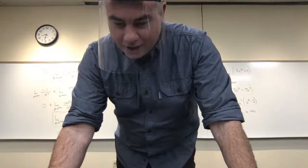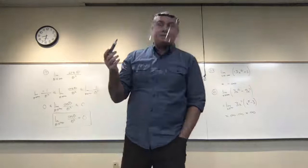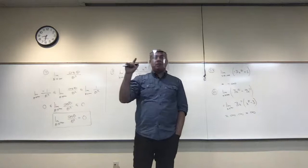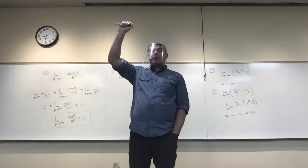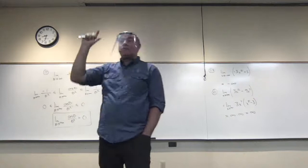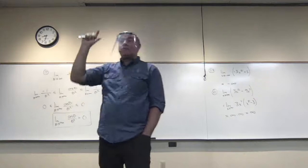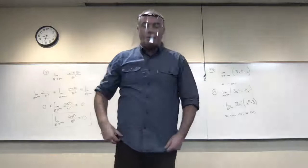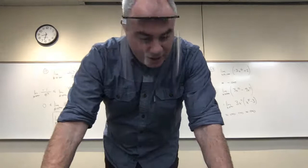Problem 35 is very similar: you have sin(x) on top — bounded between −1 and 1 — and e to the x on the bottom, which grows very fast to infinity. Something bounded over infinity goes to zero, so by the same reasoning you get zero on problem 35.